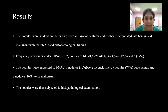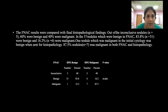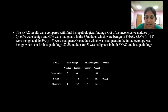On histopathological examination, 35 nodules were benign and 15 were malignant, of which 11 were papillary, 2 were medullary, and 2 were follicular carcinomas. Comparing FNAC with histopathology, of the 5 inconclusive FNAC nodules, 60% were benign and 40% were malignant. Of 37 nodules benign on FNAC, 83.8% were benign and 16.2% were malignant on histopathology. One nodule malignant on cytology was benign on histopathology, and 87% of nodules were malignant in both FNAC and histopathology.